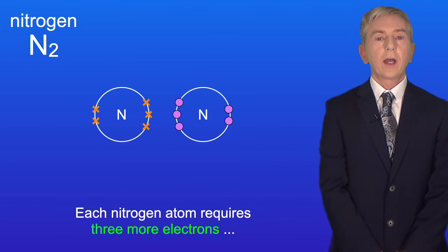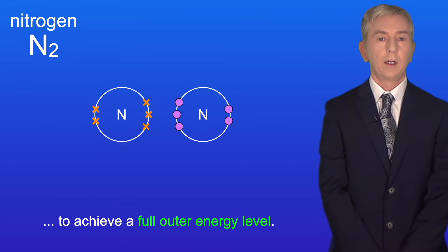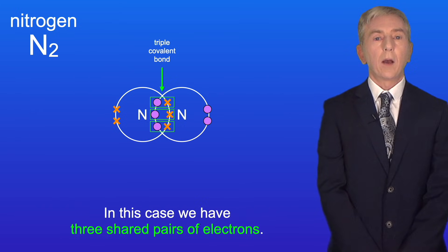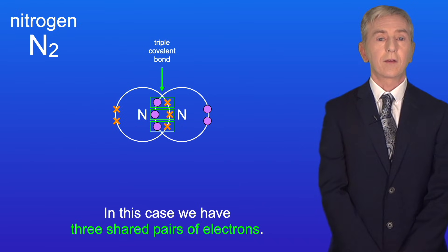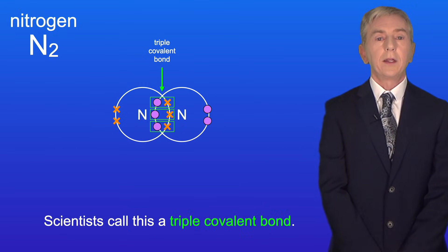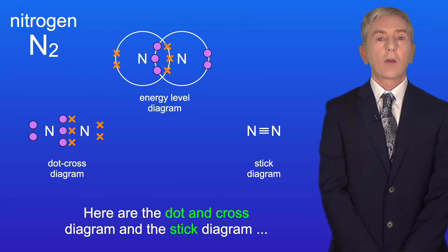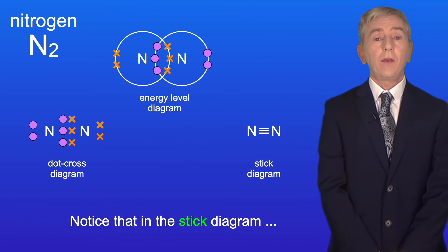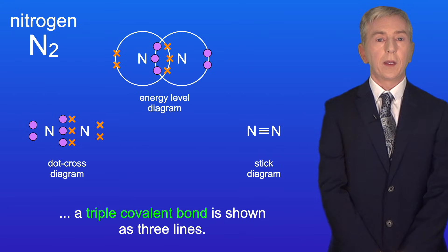Each nitrogen atom requires three more electrons to achieve a full outer energy level. They can do this by overlapping their outer energy levels. In this case we have three shared pairs of electrons, and scientists call this a triple covalent bond. Here are the dot and cross diagram and the stick diagram for the nitrogen molecule, and notice that a triple covalent bond is shown as three lines.